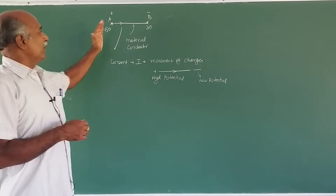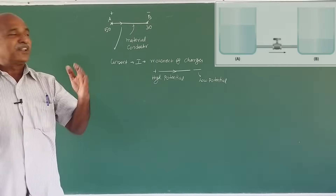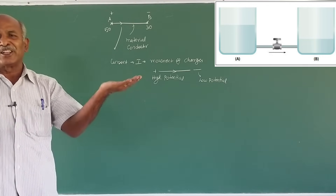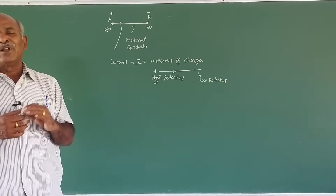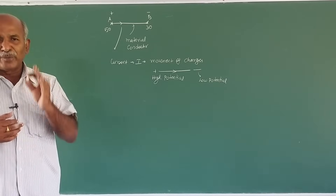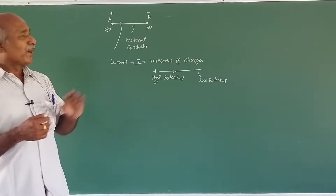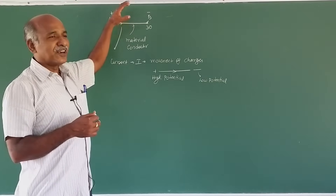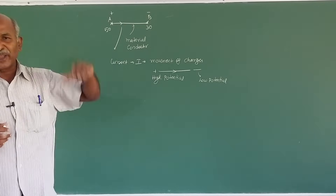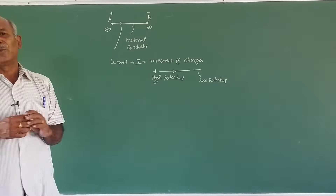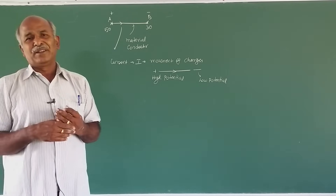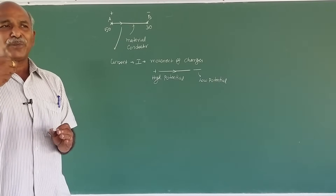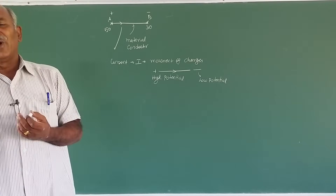Now if the two points have the same potential — for example, both have 50 electrons — and you join them, there is no movement because the potential difference is zero. The voltage is zero, so the current is zero. Current only flows when there is a difference of potential between the two points. Current is the movement of charges — it is one property, like a pump. When high potential and low potential exist, charges move out — that is the current.